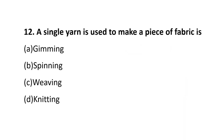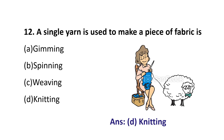Question number 12. A single yarn used to make a piece of fabric is: Option A, Gemming; Option B, Spinning; Option C, Weaving; Option D, Knitting. The answer is Option D, Knitting.